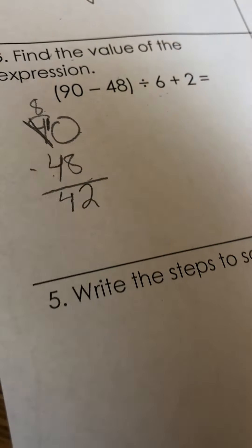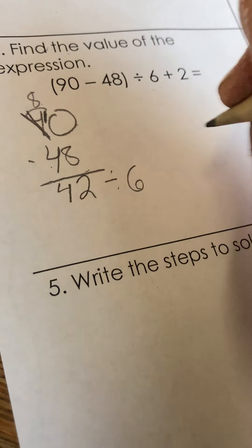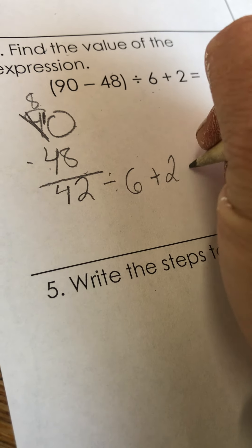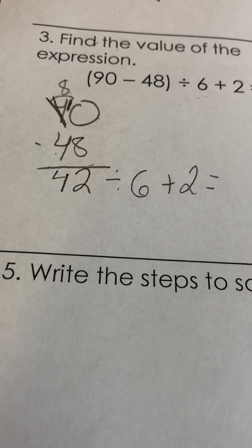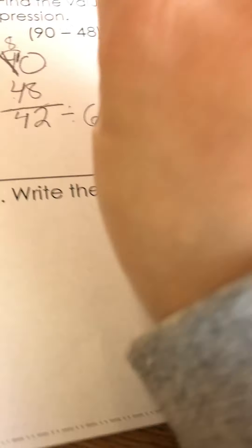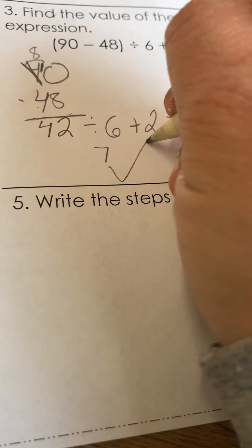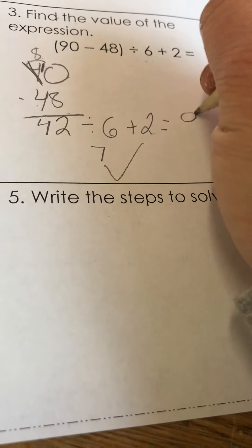So then I have 42 divided by 6 plus 2 equals. So now according to operations, I'm going to divide next. 42 divided by 6 is 7, and then 7 plus 2 equals 9.